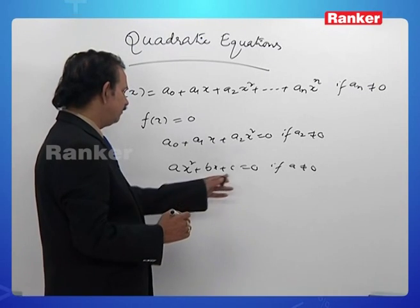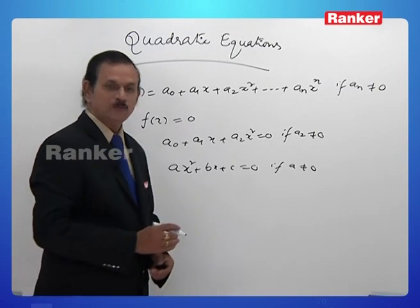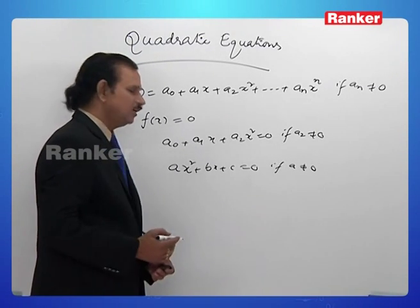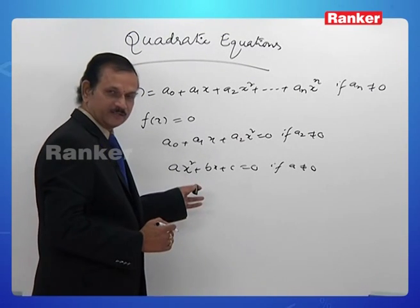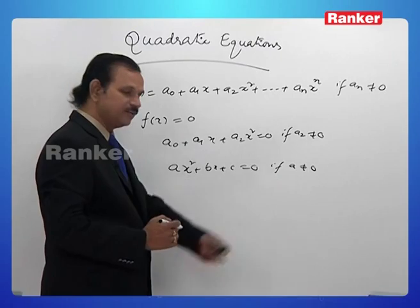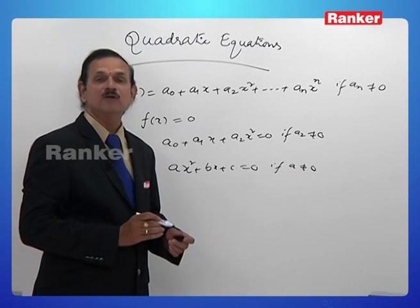As only three coefficients are needed here, we name them a, b, c instead of a0, a1, and a2. To call this a quadratic equation, we must have a not equal to 0.